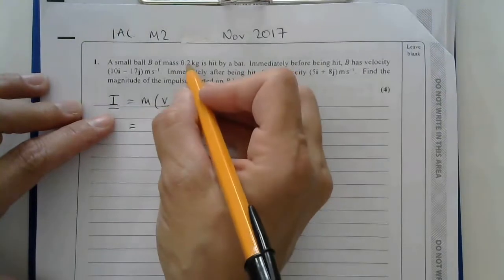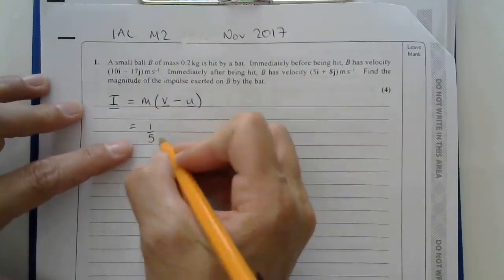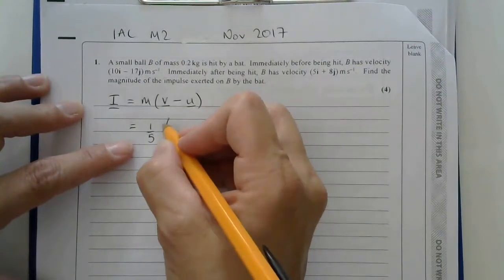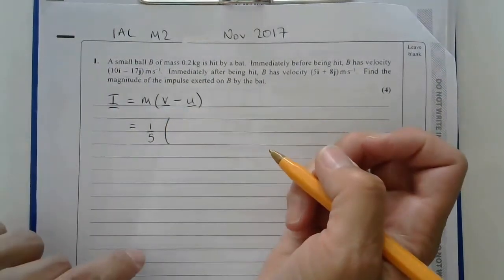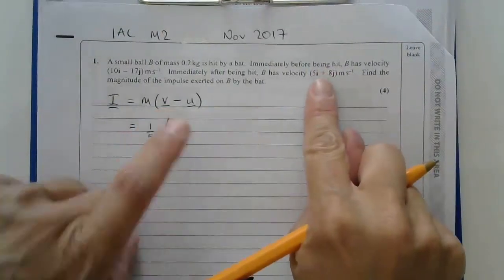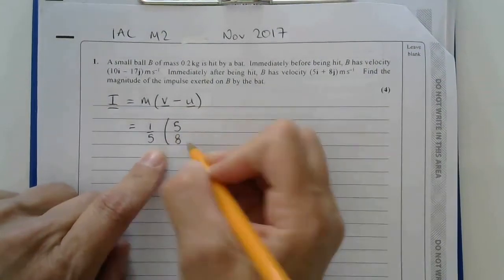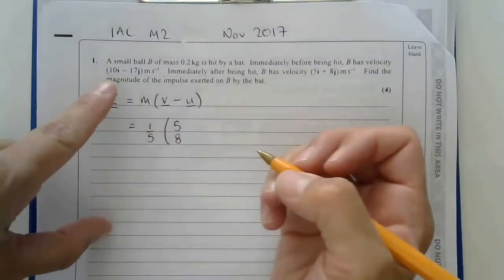So the mass is 0.2, which is 1 fifth. Let's remember that fractions are your friends. And here I need to do what V is, which is the velocity after being hit, which is this one. So I'll put 5i and 8j, and then I need to subtract these.